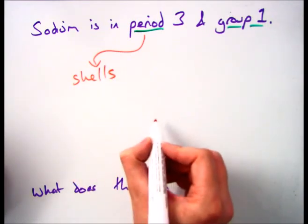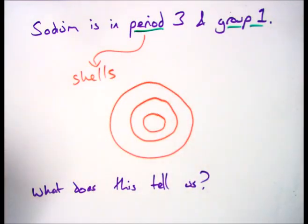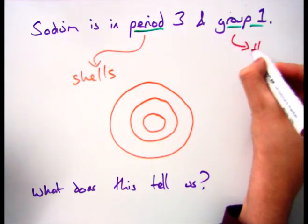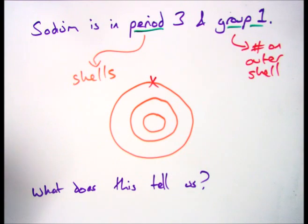The key things are the period actually tells you the number of shells that you have to draw. So it's in period 3, I draw 3 shells. The group tells me the number of electrons on the outer shell. So I put 1 in this case there.